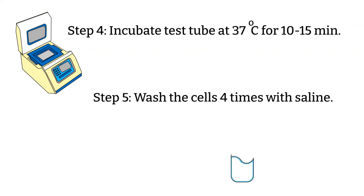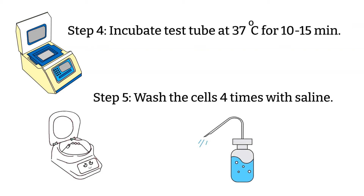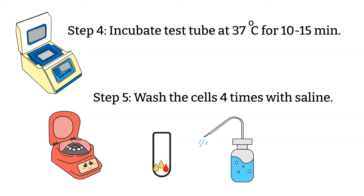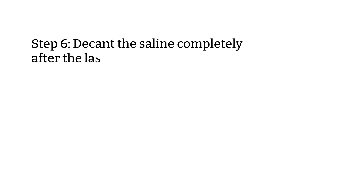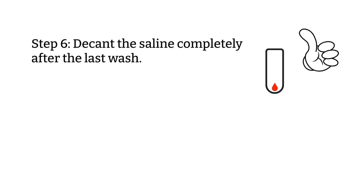Step 5: Wash the cells four times — by filling up the test tube with saline, centrifuge it for a minute, discard the supernatant without disturbing the pellet, and repeat this step four times. Step 6: Make sure you decant the saline completely after the last wash.